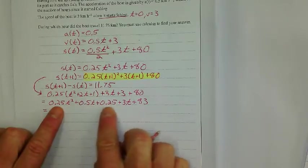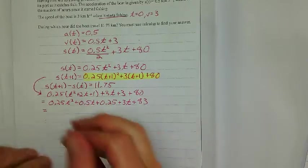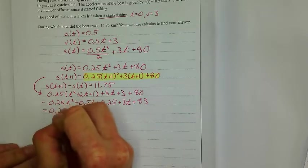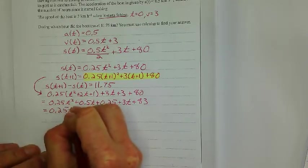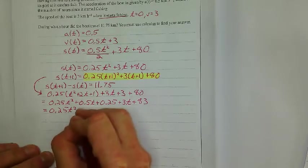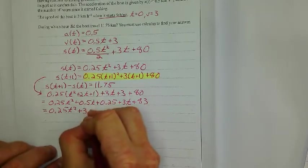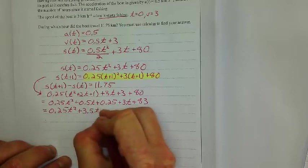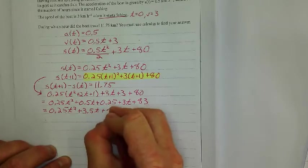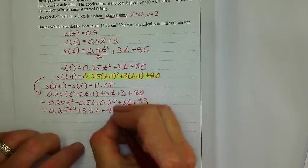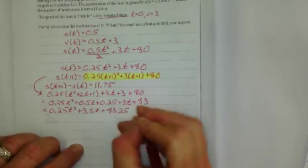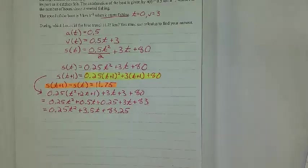Now, I'm just going to, let's see, do I have any other like terms? Yep, I can clean this up. So, 0.25t squared plus 3.5t plus 83.25.